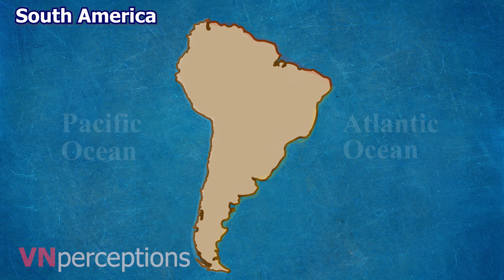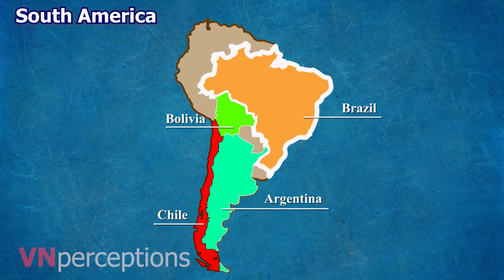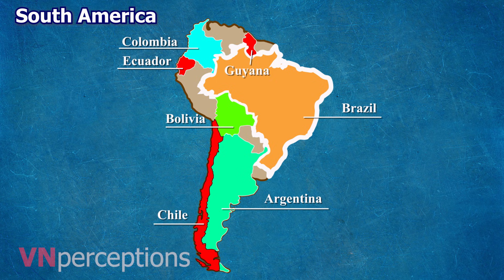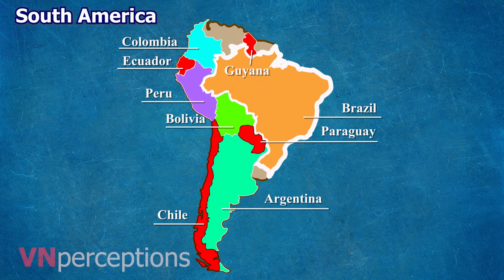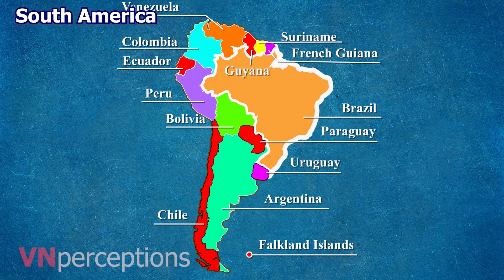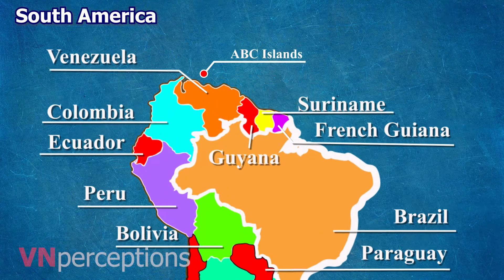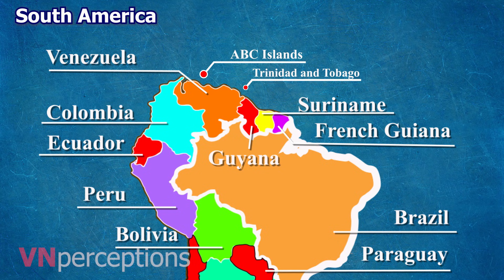South America includes 12 sovereign states: Argentina, Bolivia, Brazil, Chile, Colombia, Ecuador, Guyana, Paraguay, Peru, Suriname, Uruguay, and Venezuela. It also includes a part of France, that is French Guiana, and a non-sovereign area, the Falkland Islands, a British overseas territory, though this is disputed by Argentina. In addition, the ABC Islands of the Kingdom of Netherlands, Trinidad and Tobago, and Panama may also be considered part of South America.